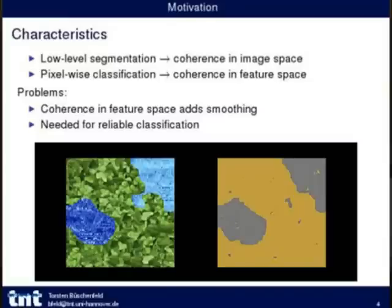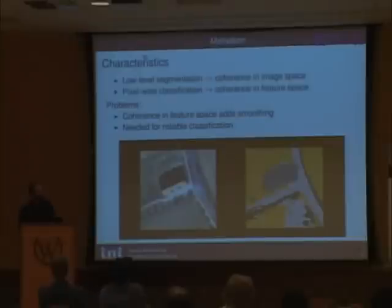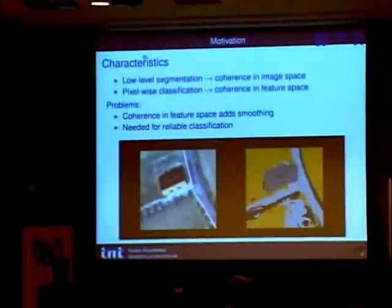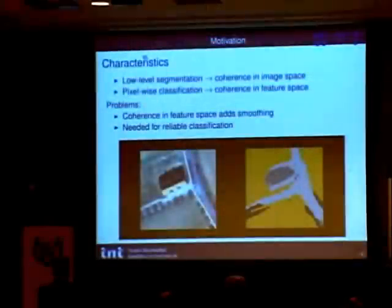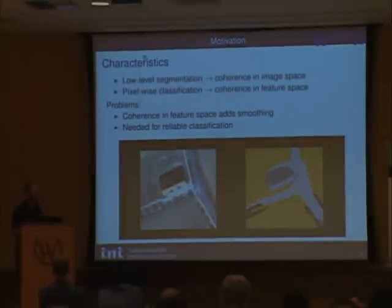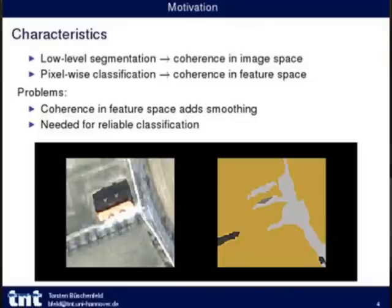The problem that arises is: you need coherence in feature space to do a proper classification, but coherence in feature space adds smoothing to the classification result. For example, with a small neighborhood the features are extracted with noise and misclassifications. When you increase the neighborhood, classification improves but adds a lot of smoothing. You need to increase the neighborhood to cover all varying structure sizes, like industry or small forest groups, but at some point this rules out all fine details.